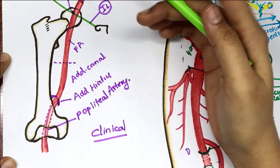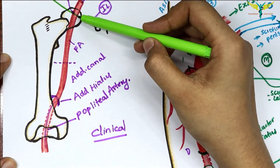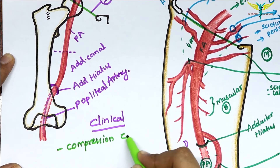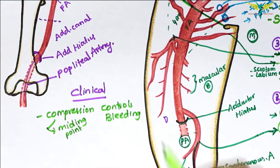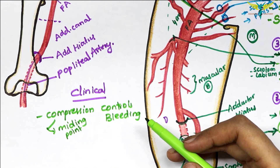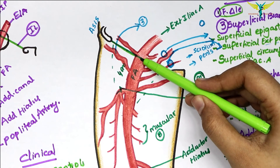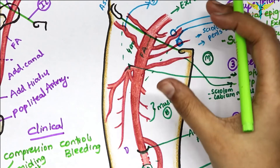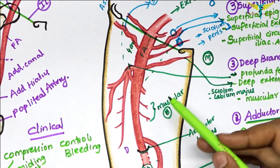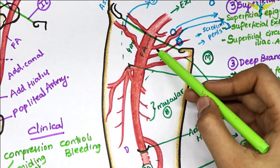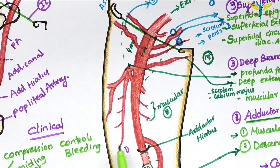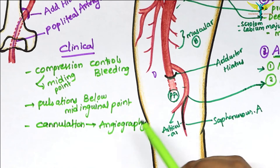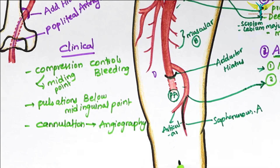Clinically, the femoral artery can be easily compressed against the femoral head at the mid inguinal point to control bleeding in the distal part of the limb. The pulsations of the femoral artery are felt in the femoral triangle just below the mid inguinal point. Since the femoral artery is superficial in the femoral triangle, it is the preferred artery for cannulation and injection of dye for procedures like angiography, coronary angiography, and angioplasty.